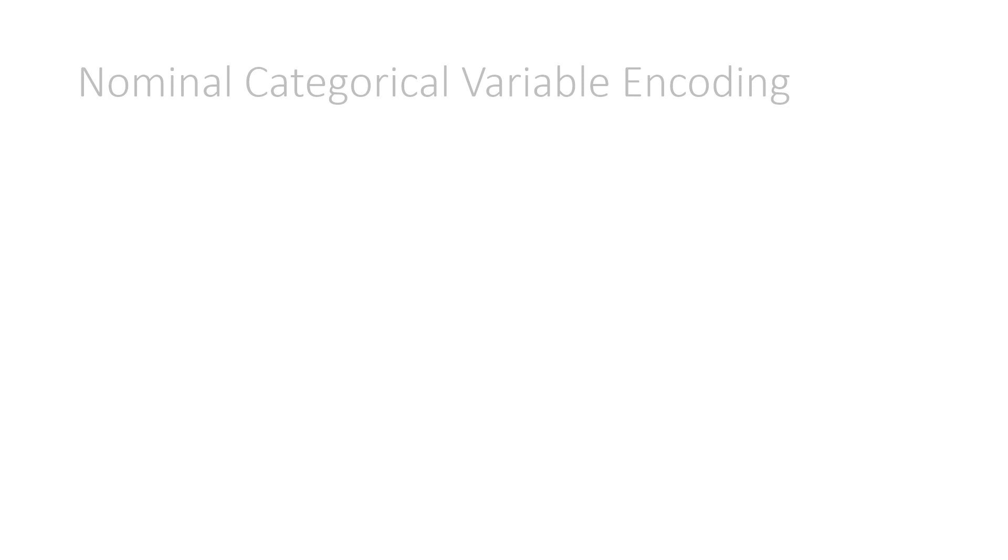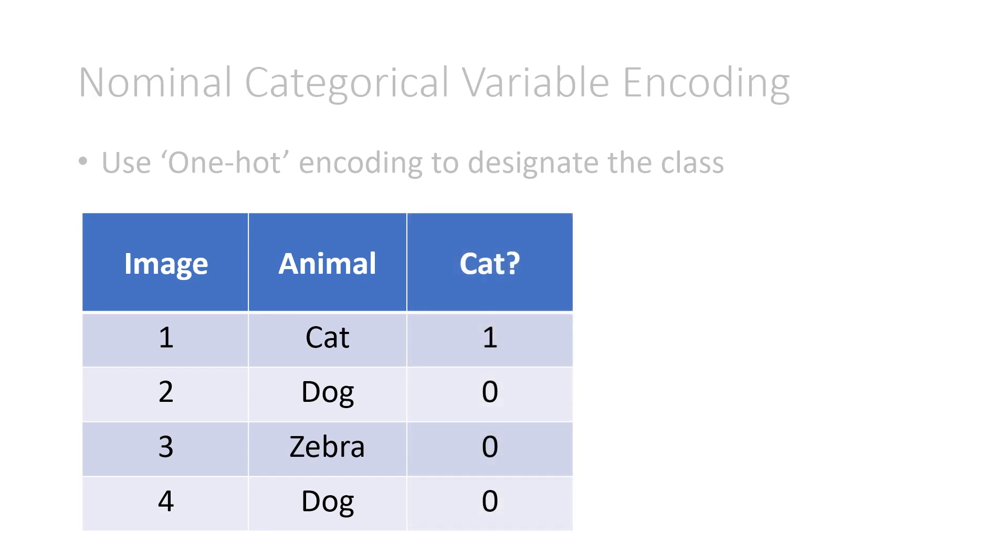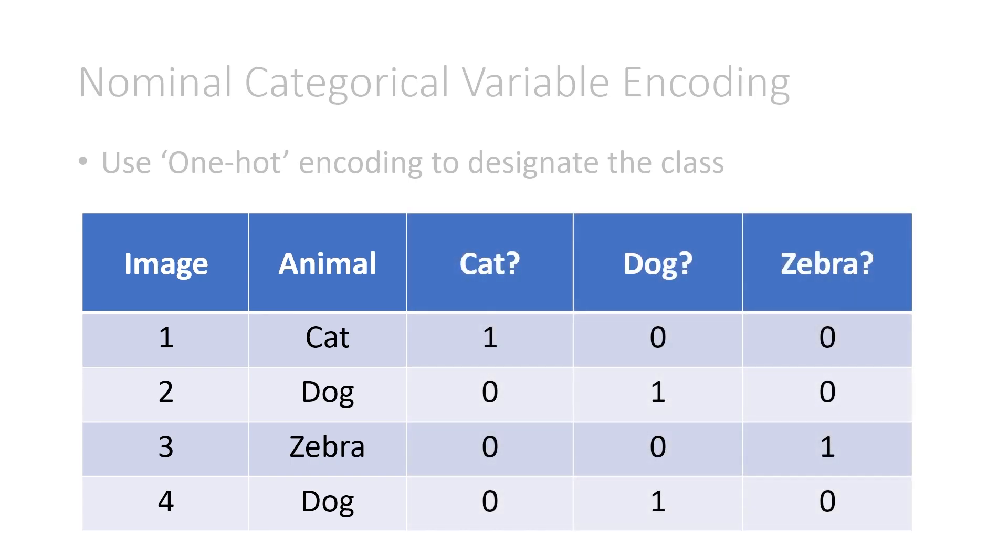The most common way to do this is using one-hot encoding to designate the class. So maybe we had four different images in our dataset, and we had an animal column saying that the first is a cat, second is a dog, third is a zebra, and the last is a dog as well. We need to encode this animal column so it is numerical. We do this by asking three questions, one for each class. Is it a cat, is it a dog, or is it a zebra? It must be one of those three things.